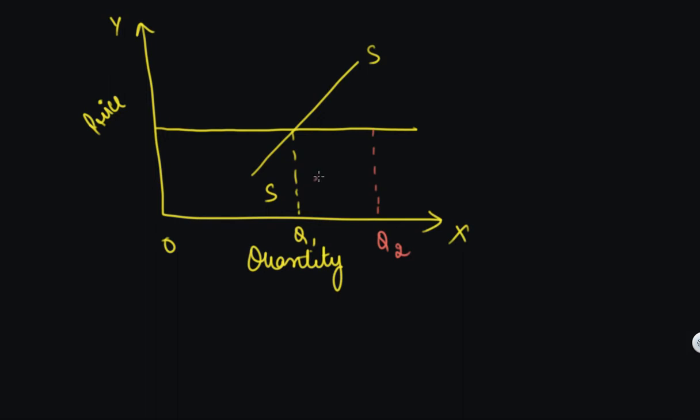So your supply curve will shift rightward. So this is increase in supply due to improvement in technology.